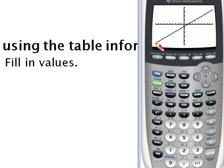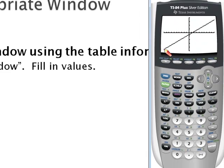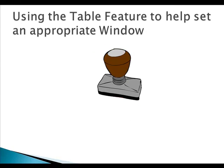So while zoom 6, the standard window, will often be fine for graphs of linear functions, using the table to obtain y minimum and y maximum values is especially helpful when the outputs are not between negative 10 and 10. Part 2 of this video will show an example of this. Thank you for watching.